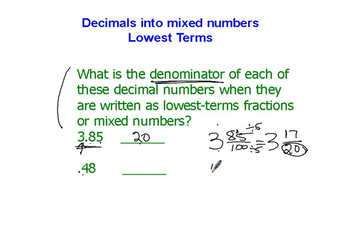This next one is 48 hundredths. How can we simplify that? Well, I know they're both even numbers. So let's go ahead and chop them down in half just to get started, make the numbers a little bit smaller.